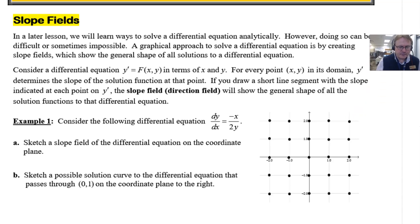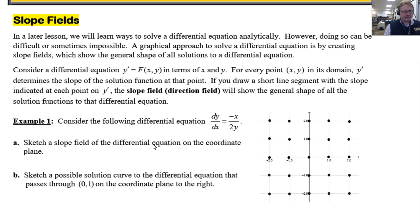So let's move me out of the way and reread this question. Consider the following differential equation dy/dx is negative x over 2y. Sketch a slope field of the differential equation on the coordinate plane. And then they ask us to sketch a possible solution curve to the differential equation that passes through zero one. Well I want to tell you something.